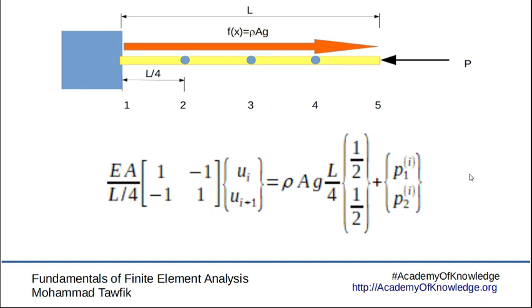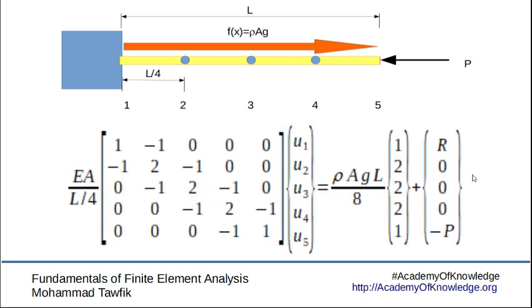We will go and now assemble the equations. We have now the system matrix is a five by five matrix with the same shape that we expected: 1, -1, -1, 1. Then we add 1 here, 1, -1, -1, 1. Then we add 1 here, and so on.